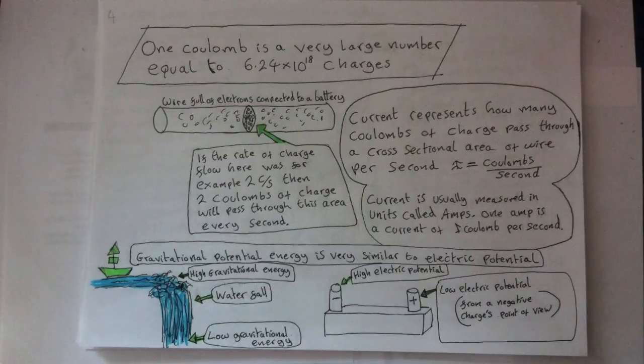Current can be thought of as a flow of charge, a little bit like water currents are the flow of water molecules. Water molecules tend to flow from areas of high gravitational potential energy to low gravitational potential energy. Electric currents flow from high electric potential to low electric potential. And the greater the difference between the high and low potential, the more current that flows.